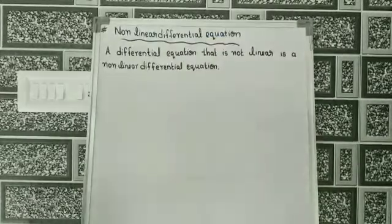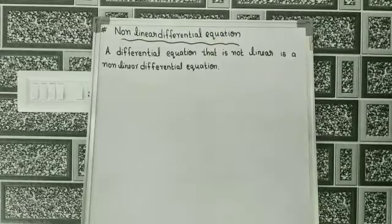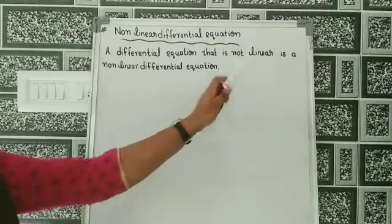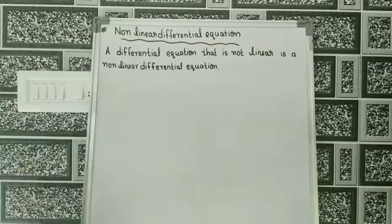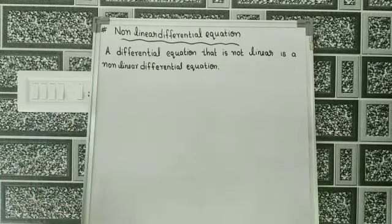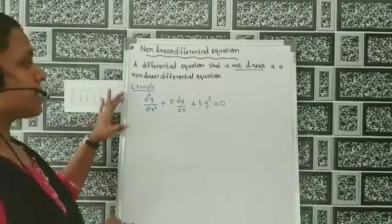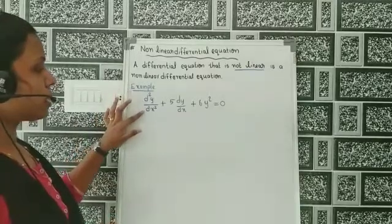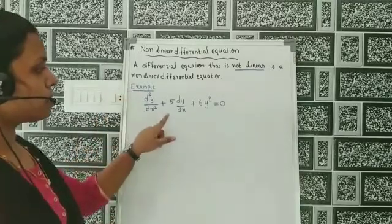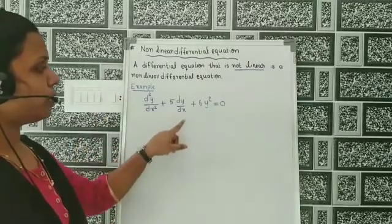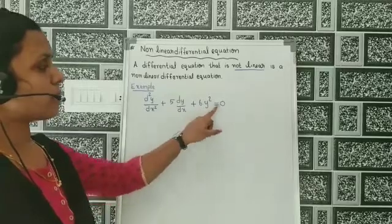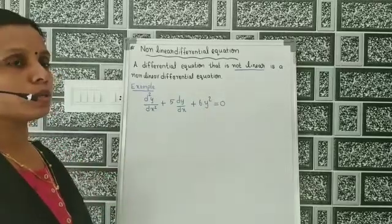A differential equation that is not linear is said to be a non-linear differential equation. Consider the example: d²y/dx² + 5(dy/dx) + 6y² = 0.